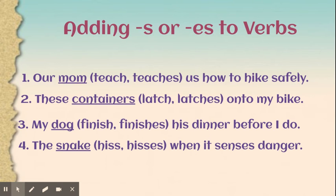Number four: 'The snake hiss or hisses when it senses danger.' You should have picked 'hisses.' The snake is a singular noun, so we add a singular verb — we add -es to 'hiss' because it ends with -s.